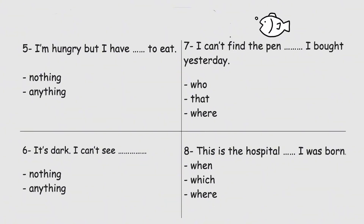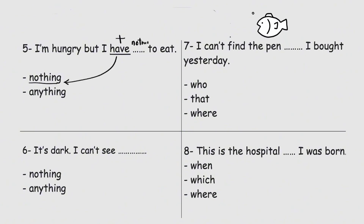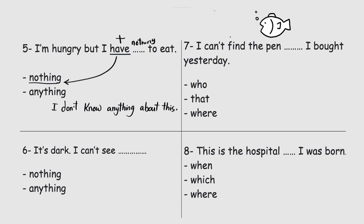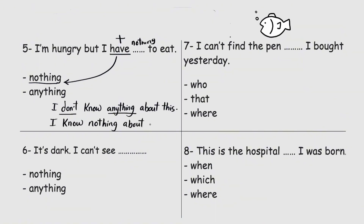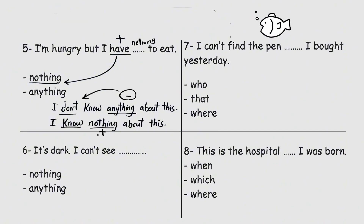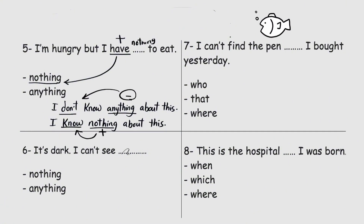'Have' — the sentence is positive, so we use 'nothing': I have nothing to eat. You can say 'I don't know anything about this' — 'don't' is negative, so we use 'anything'. Or using 'nothing' in a positive structure: I know nothing about this. Clear? Anything in negative sentences, nothing in positive sentences — and they give the same meaning.